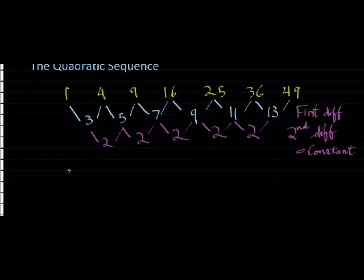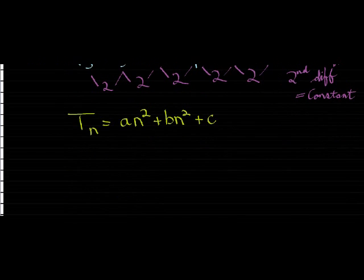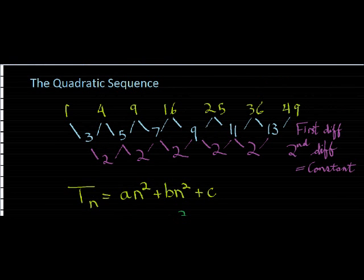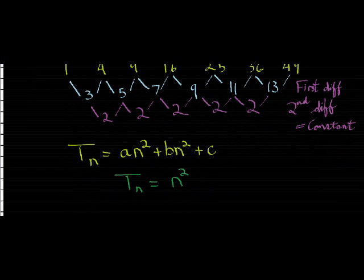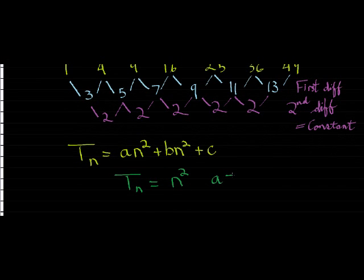So what would its general term look like? Well, its general term is going to be a quadratic equation, where n represents the term's position. In this specific one, we can see, for example, that every time I am squaring my term position. So the first term is 1 times 1, the second term is 2 times 2. So I am actually just taking my n and squaring it. Which means that a is equal to 1, b is equal to 0, and c is equal to 0 in that expression.